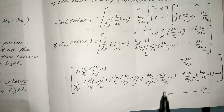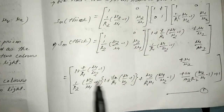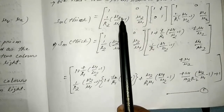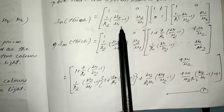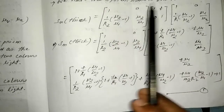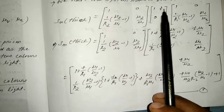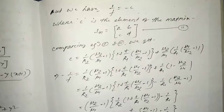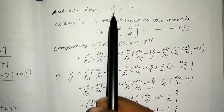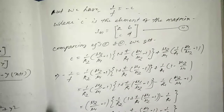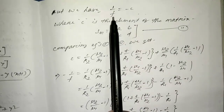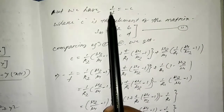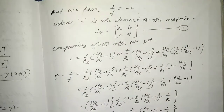Now, Nu2 is the refractive index of the material of the lens, and Nu1 is the refractive index of the medium in which the lens is placed. T is the thickness of the lens. We have 1/F from the previous video — focal points and cardinal points, location of focal point, nodal point, and principal point. So 1/F equals minus C.